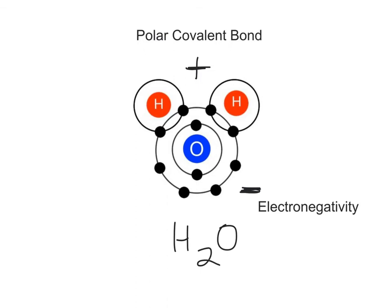The stronger attraction for electrons by one of the atoms is due to it having a greater electronegativity, which is a measure of an atom's ability to pull a shared pair of electrons toward itself. As an analogy, think of the atoms involved in a polar covalent bond as being in a tug of war, with the rope being the shared pair of electrons. The atom with the greater electronegativity will pull harder on the electrons than the atom or atoms with the lesser electronegativity. The oxygen atom has a greater electronegativity compared to the hydrogen atoms, and is therefore pulling harder on the shared electrons, and ultimately wins the tug of war.